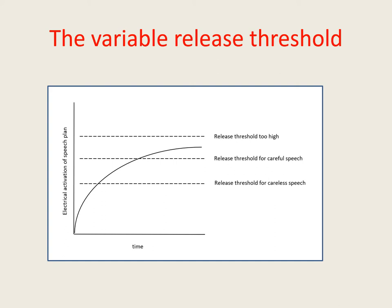If the speaker tries too hard to speak a word completely accurately, the release threshold for that word will rise so high that the plan for the word will never become sufficiently electrically activated to enable it to be released for motor execution. As a result, the speaker will find himself unable to say that word — he'll block on it. In the cartoon, this is why the hedgehog finds himself unable to say 'muffin', but can say 'toast' because the release threshold for 'toast' has not been set so high.